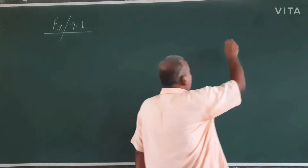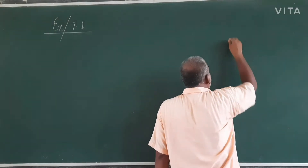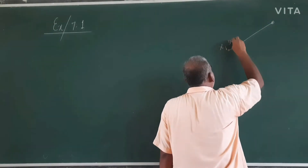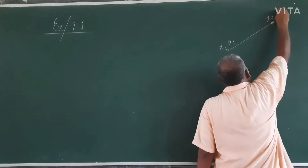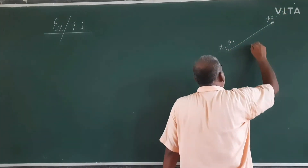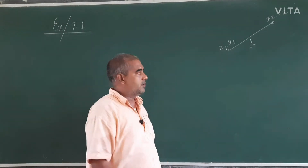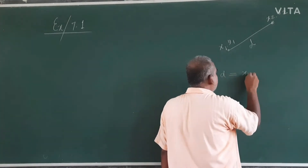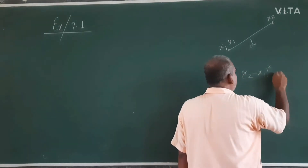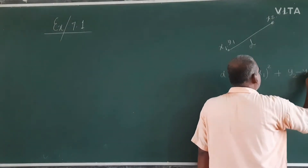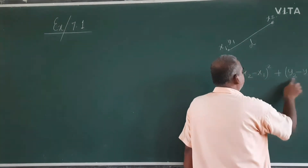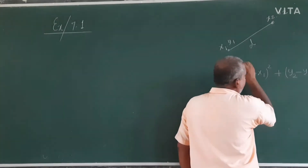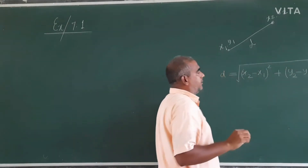Let's have a revision. Here is a rough figure with two points: (x1, y1) and (x2, y2). The distance d between these two points equals the square root of (x2 minus x1) whole squared, plus (y2 minus y1) whole squared.